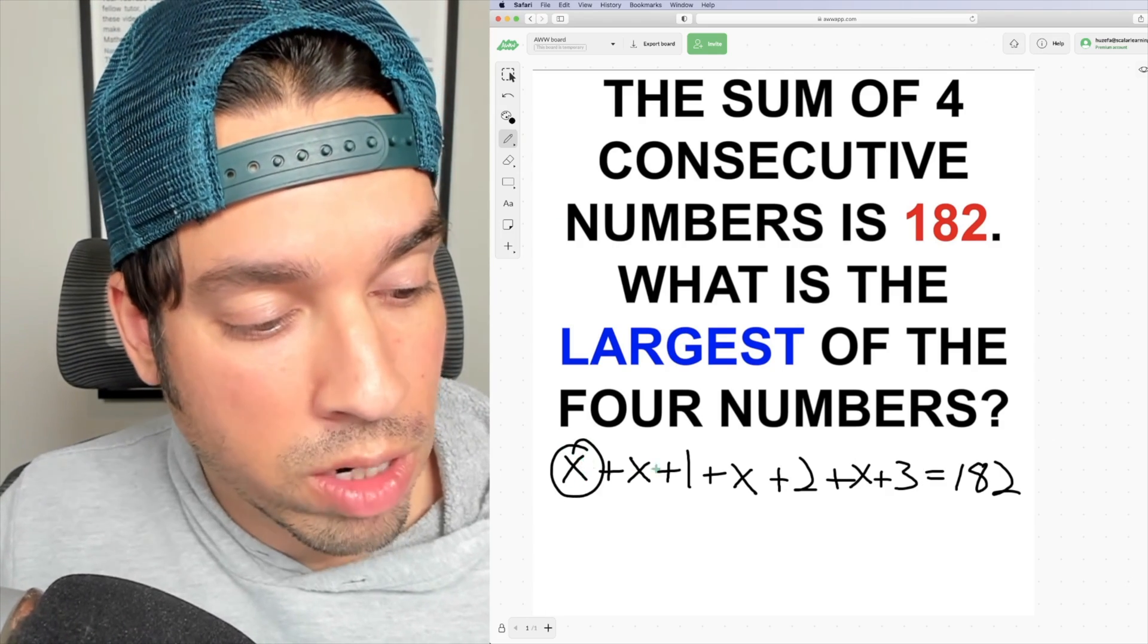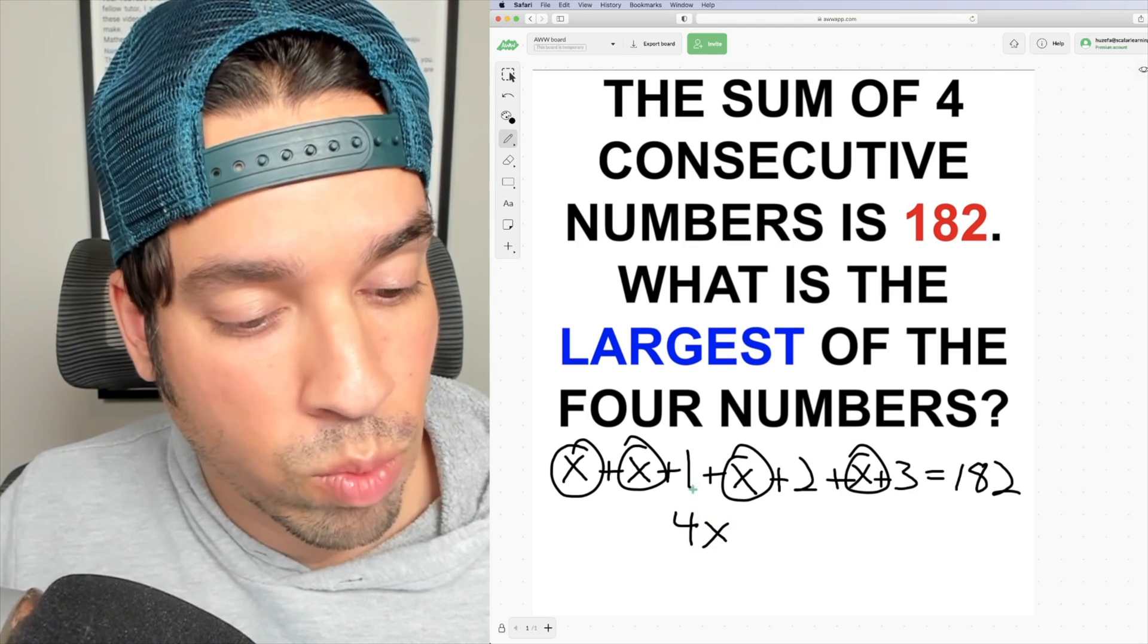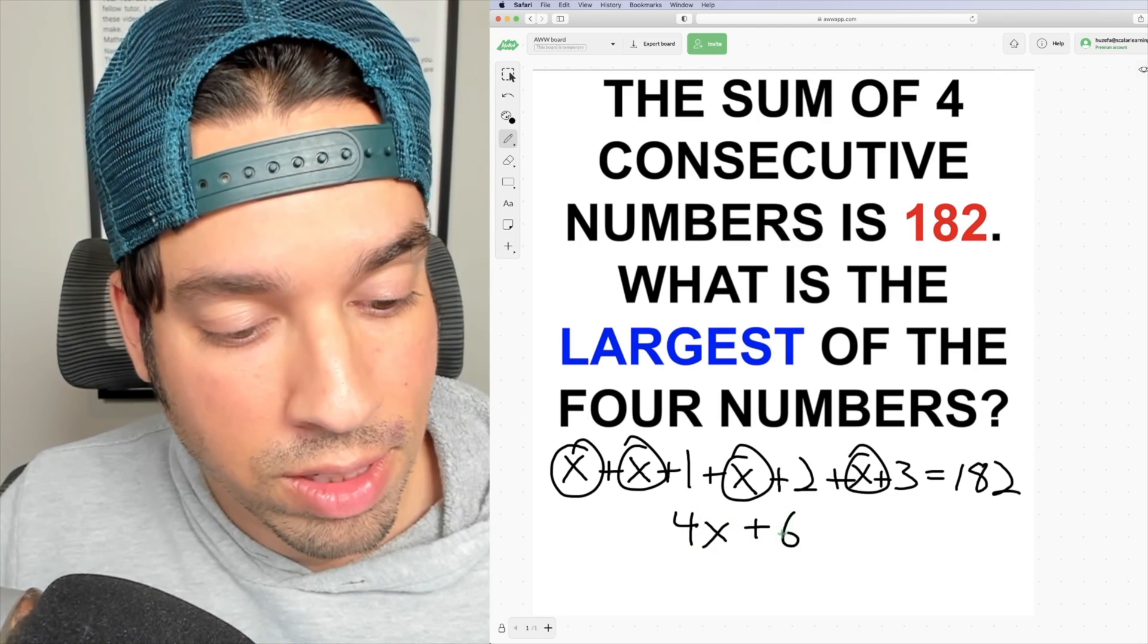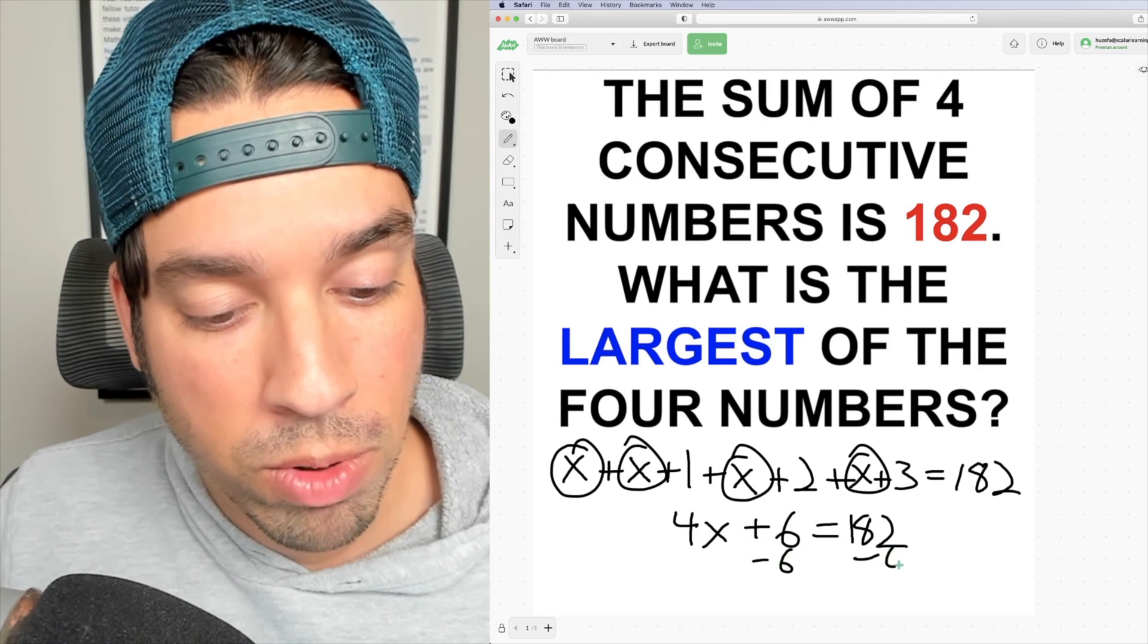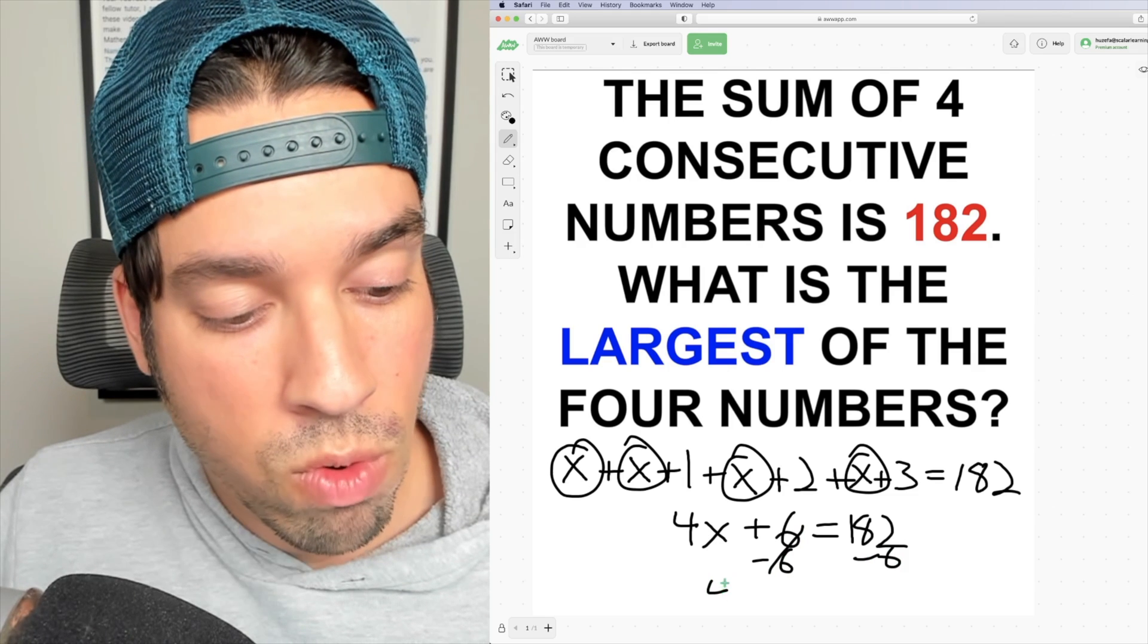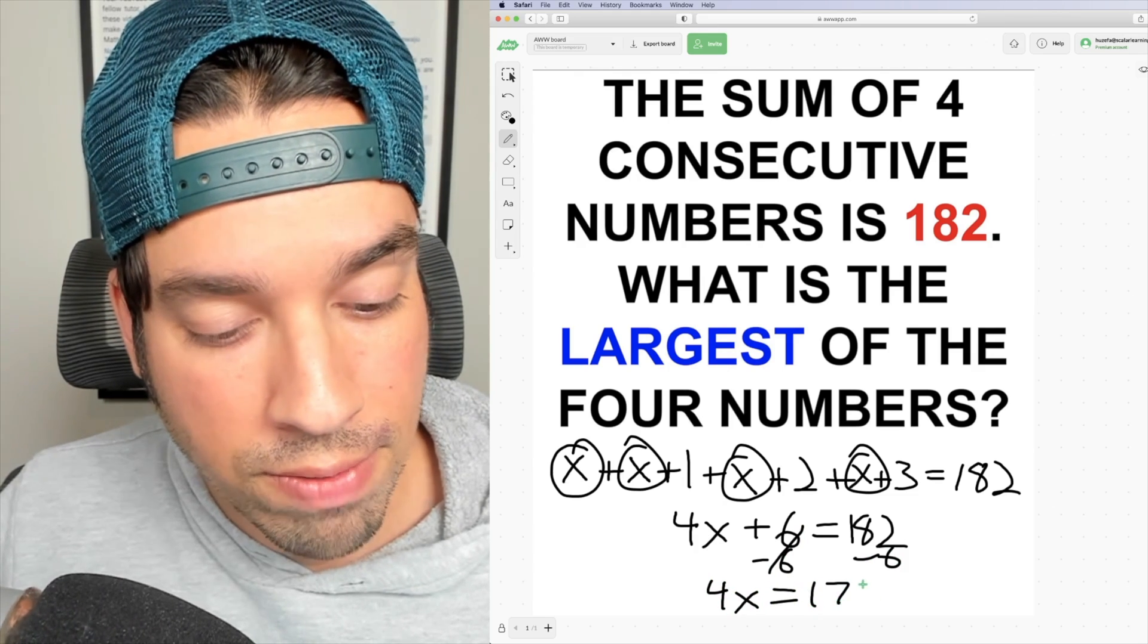Now let's combine like terms. We've got 1, 2, 3, 4 X's, so that's 4X. 1+2+3 is of course 6, equals 182. Let's subtract 6 from both sides, and I get 4X equals 176.